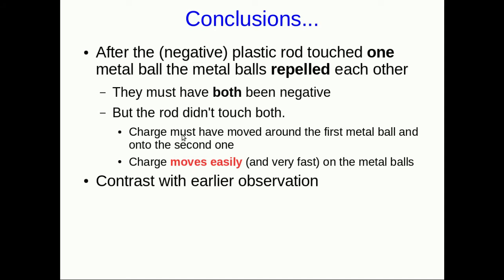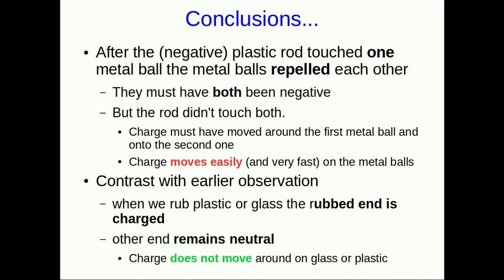Let's contrast that with an earlier observation. When we rub plastic or glass the rubbed end ends up charged but the end that we didn't rub remains neutral because the unrubbed end doesn't exert any electrical forces. So while charge moves around easily on the metal balls it doesn't seem to move around on glass or plastic. This is telling us that there are fundamental differences between these materials. I could discharge those metal balls by just touching them just for a moment but to fully discharge a plastic rod I had to touch it all over and roll it around on the desk. It took some effort. This is again telling us there are some big differences about how charge is transported on these objects.